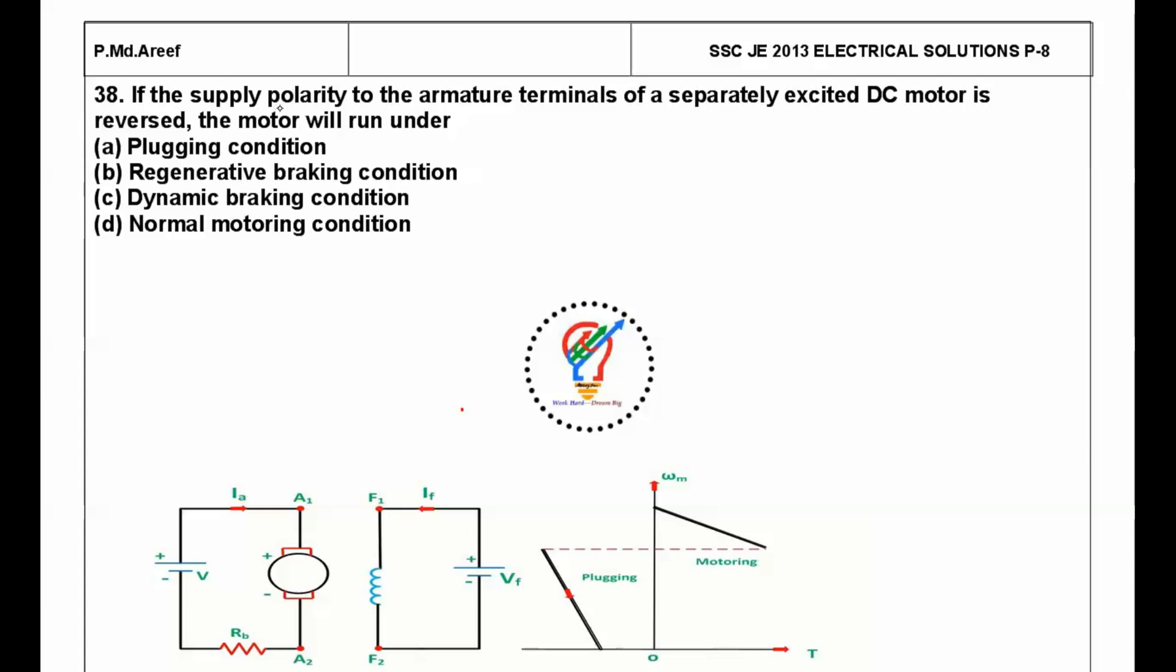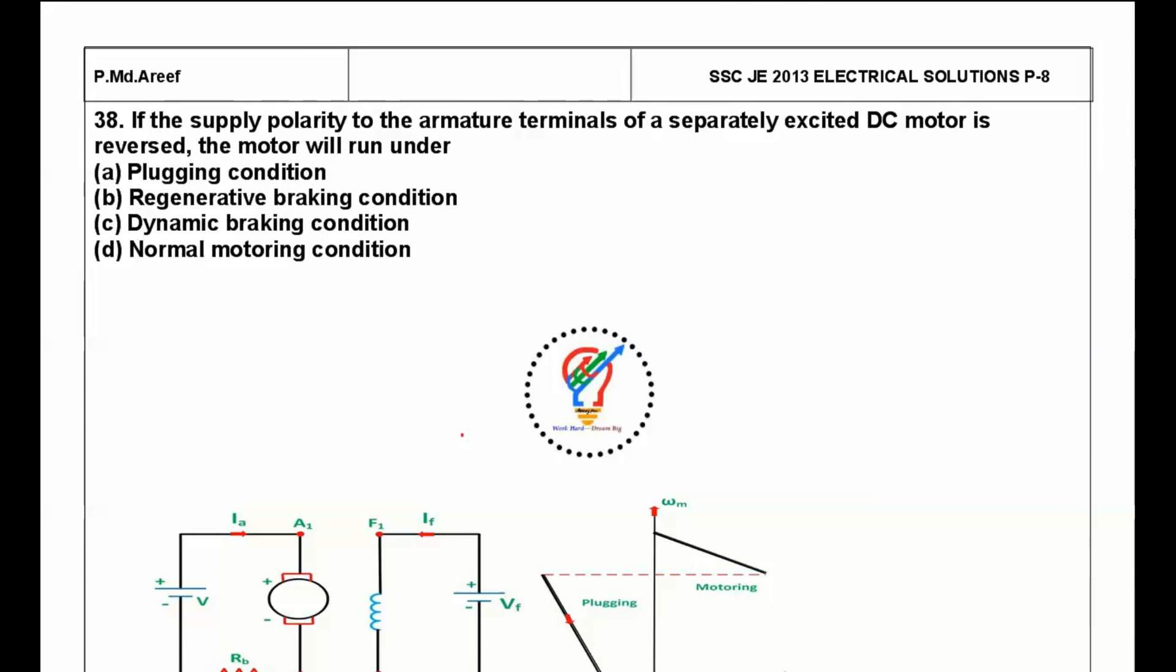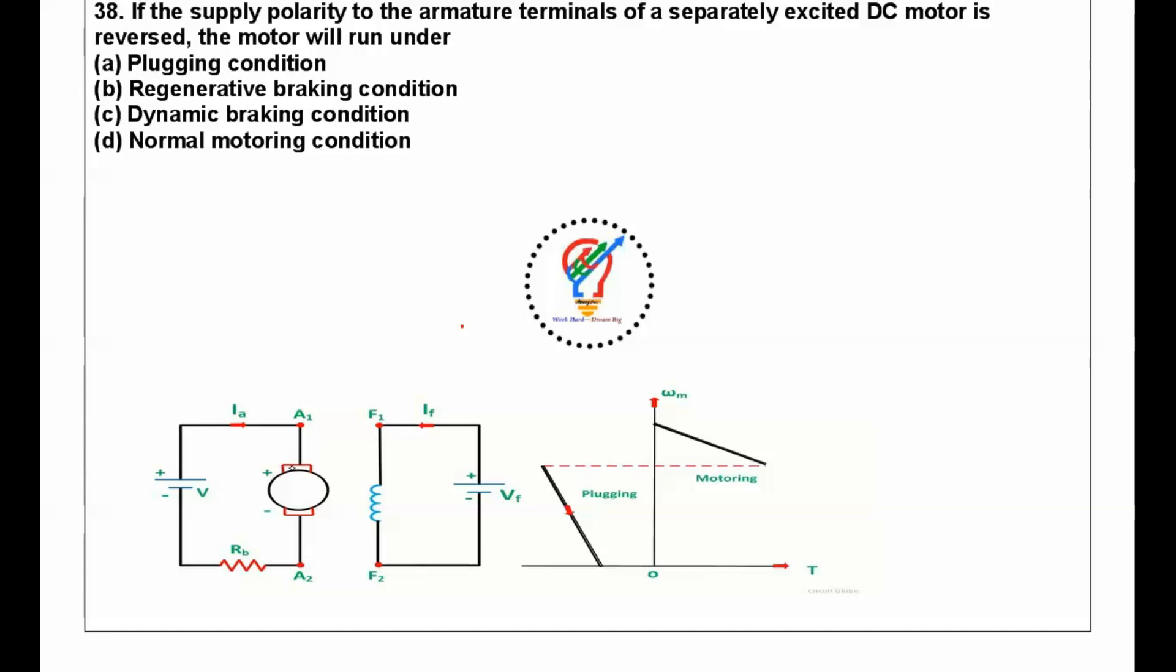Next question: if the supply polarity of the armature terminals of a separately excited DC motor is reversed, the motor will run under what condition? As you can see here, A1 and A2 are the armature terminals of a DC motor. This is a separately excited DC motor, the current is flowing like this. During this condition, the machine is running at a speed, say this is the maximum speed, that is the no-load speed of the machine.